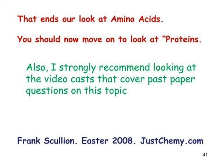That ends our look at amino acids. You should now move on to the Snapcast dealing with proteins, which covers how amino acids come together to form polypeptide chains through condensation polymerisation. We will see that proteins consist of polypeptides — essentially polyamides containing the peptide link C(=O)–NH — and we will look at their primary, secondary, tertiary, and briefly quaternary structure. Thanks for listening.